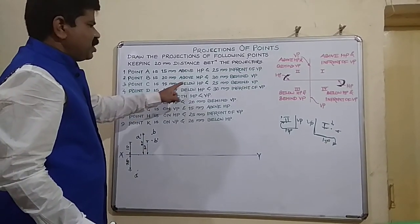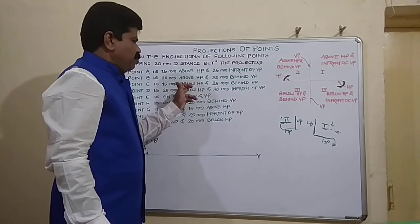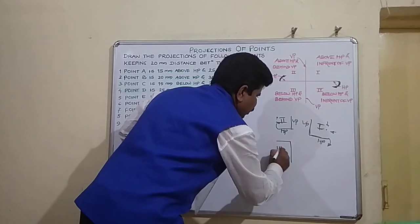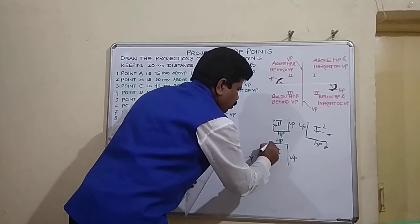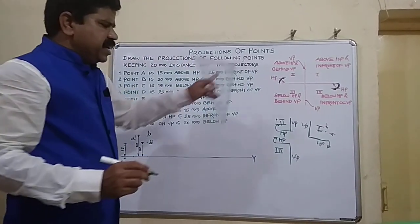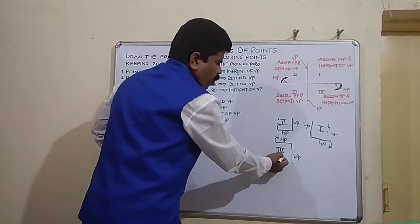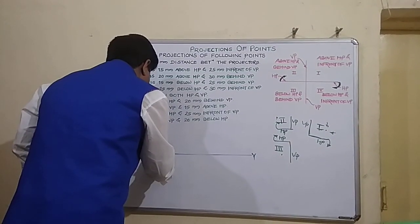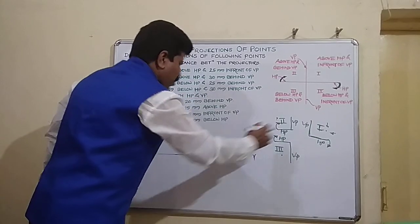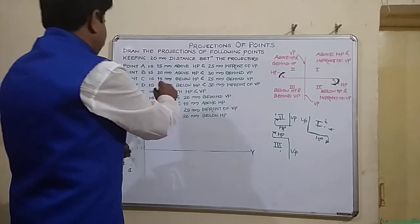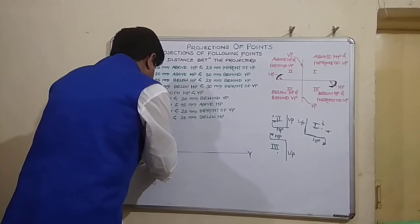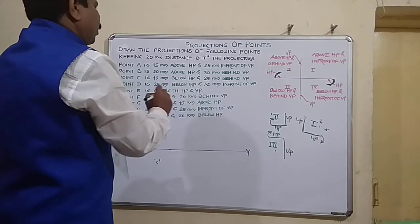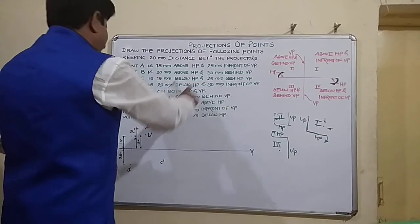Coming to the third point: point C is 50 mm below HP and 25 mm behind VP. Below HP and behind VP belongs to the third quadrant. For the third quadrant: HP is rotated clockwise 90 degrees to open the quadrant. The front view will be developed below XY, and importantly the top view will be above XY — opposite to that of the first quadrant.